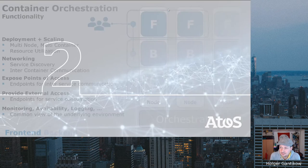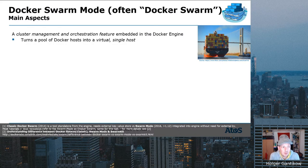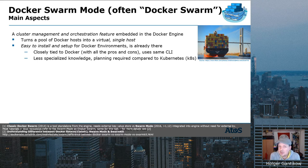The simplest solution for this is to use Docker Swarm — or more technically, Docker Swarm mode. It's a cluster management and orchestration feature embedded in the Docker engine. It turns a pool of Docker hosts into a virtual single host. It's super easy to install and set up for Docker environments, as it's already inside your Docker installation just waiting for you to use it. We don't have time for a demo, but trust me, it's super easy to get started with.